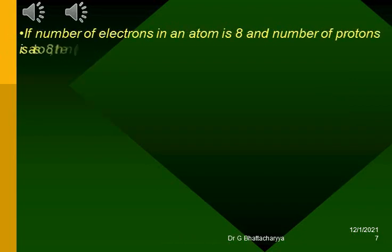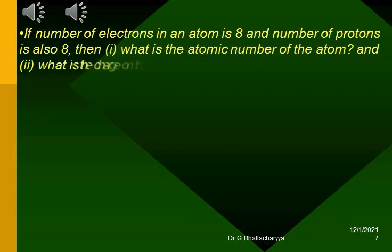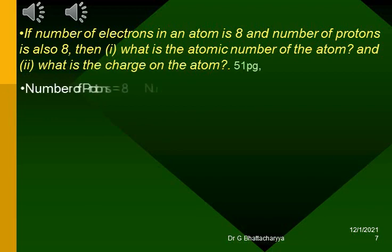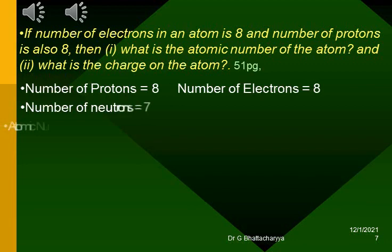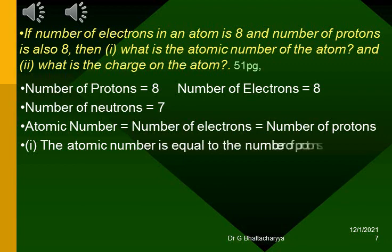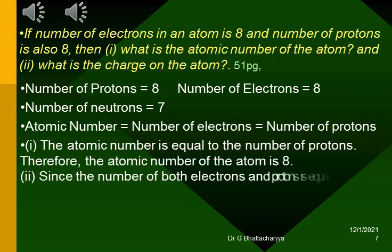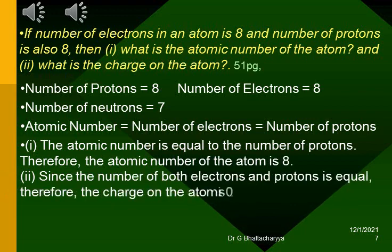If number of electrons in an atom is 8 and number of protons is also 8, then 1, what is the atomic number of the atom? And 2, what is the charge on the atom? Number of protons 8, number of electrons 8, number of neutrons 7. Atomic number equals number of electrons equals number of protons. Therefore, the atomic number of atoms is 8, electrons and protons are equal.